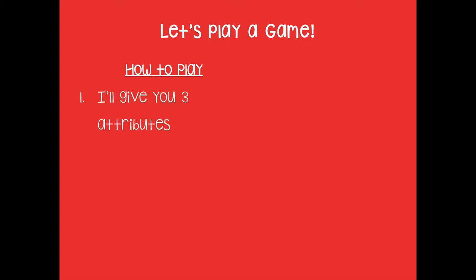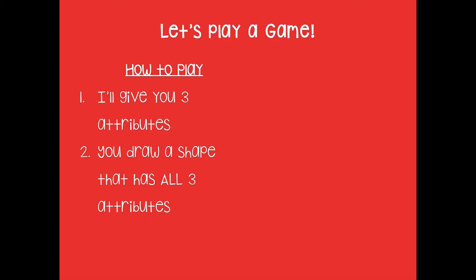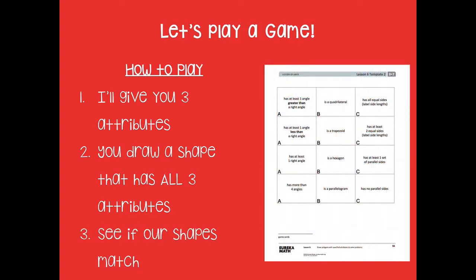Let's play a game. You'll still need your board. I'm going to give you three attributes and you're going to draw a shape that has all three — not one, not two, but all three. Then we'll see if our shapes match. You can also play this game with your learning guides or a partner using the lesson template from the module or your math book. You'll need to label the shapes with A, B, and C, cut them out, place them in three piles, and pick one card from each pile to get your three attributes.